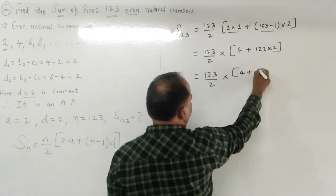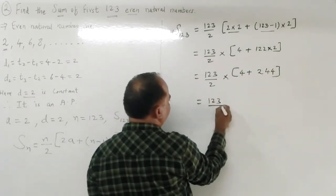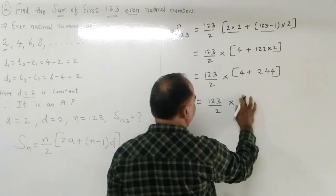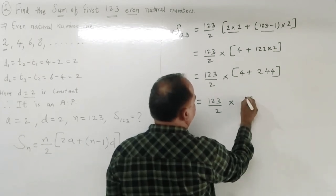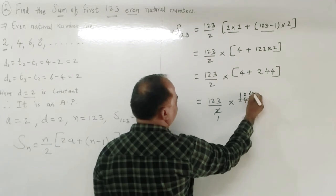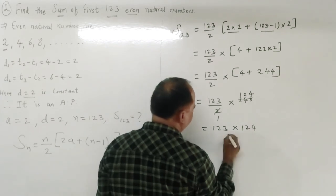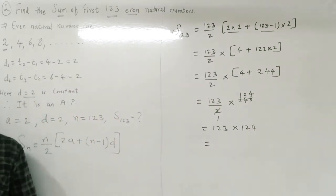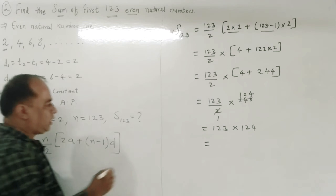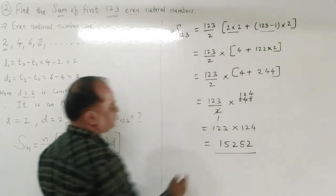Therefore S123 = 123/2 × (4 + 244) = 123/2 × 248. Dividing 248 by 2 gives 124, so S123 = 123 × 124. Multiplying these two numbers gives the answer 15252.